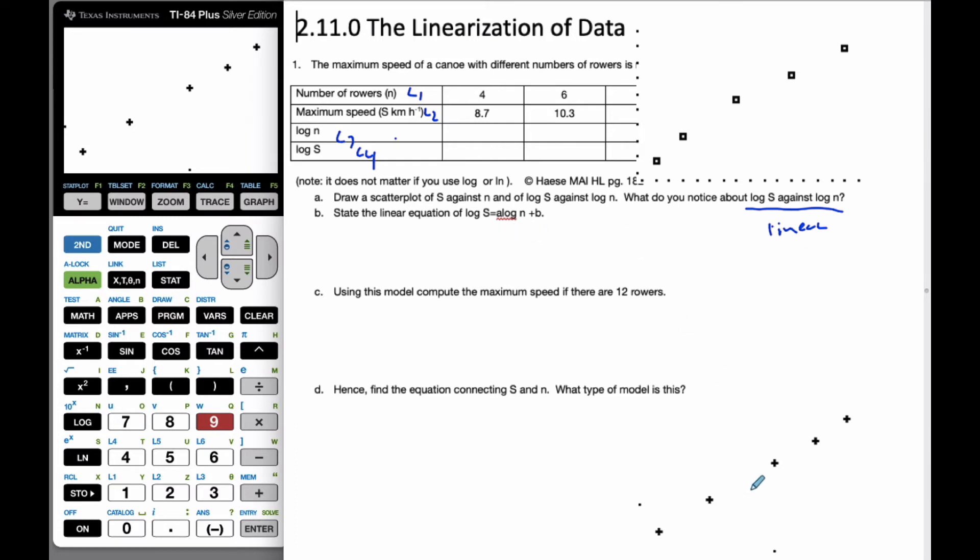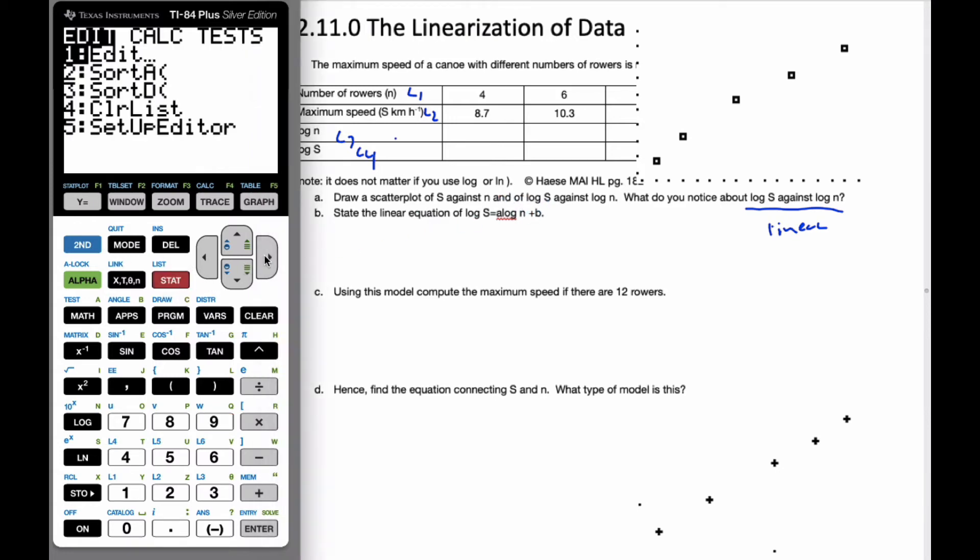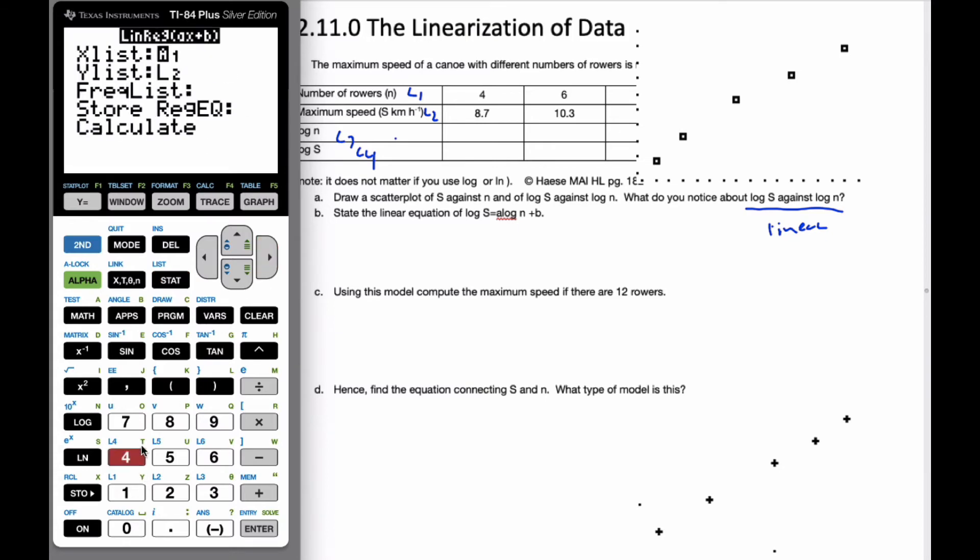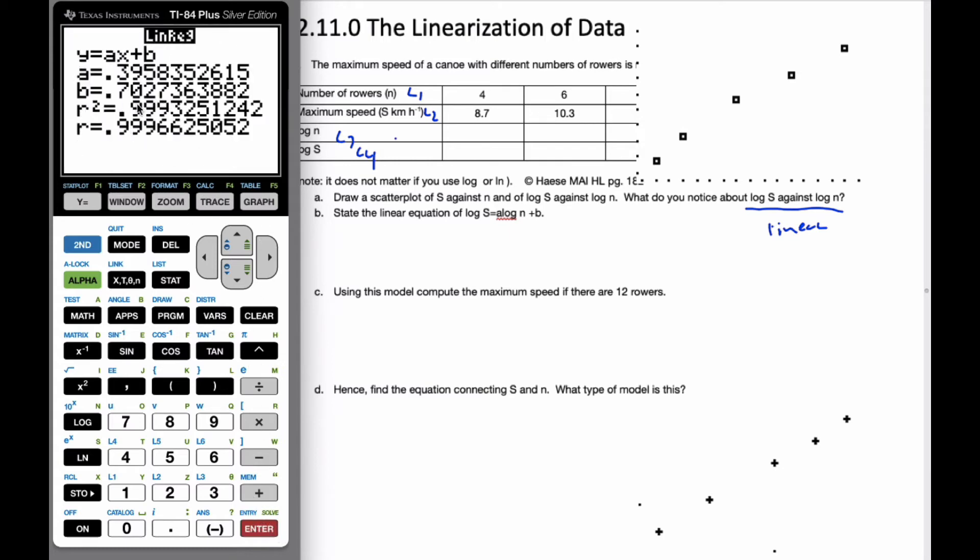Okay, so now, since I know the log, log graph is going to be linear, let's get the linear equation of log S on log N. So if I go to my statistics, I'm going to calculate the linear regression. I'm going to do the number 4. L3 is my X value. Keeping track of my variables. And L4. Let's put the regression equation into Y1 so I can have the equation and let us hit enter on that.